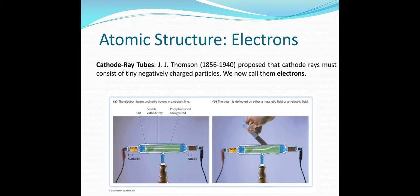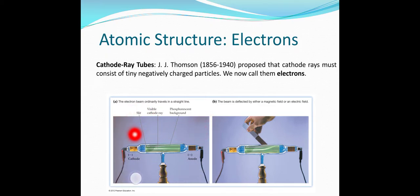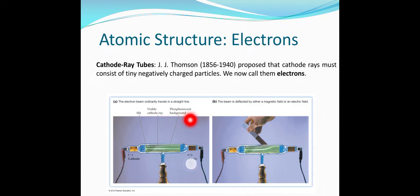The atomic structure of electrons is explained by J.J. Thomson's cathode ray tube experiment, which proposed that cathode rays consist of tiny negatively charged particles — now called electrons. In the cathode ray tube, the anode is positive and the cathode is negative, and a visible cathode ray of negatively charged particles travels toward a phosphorescent background.